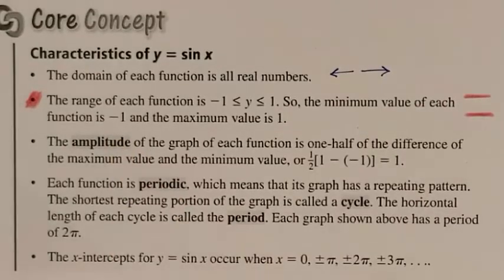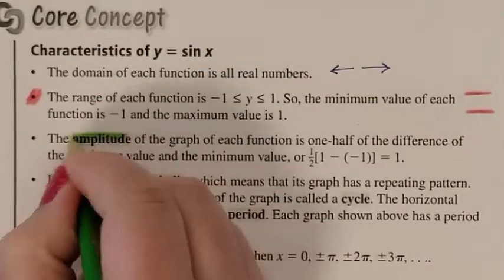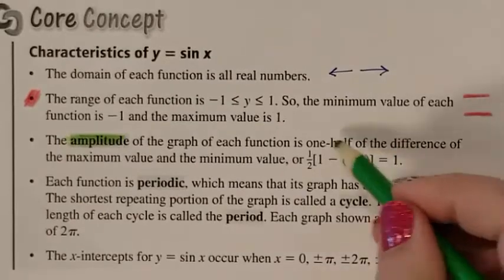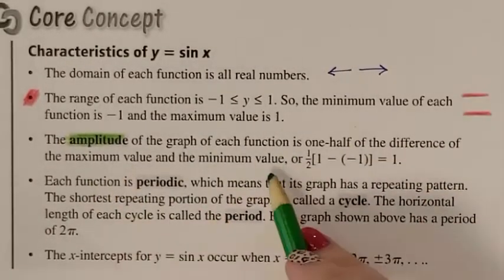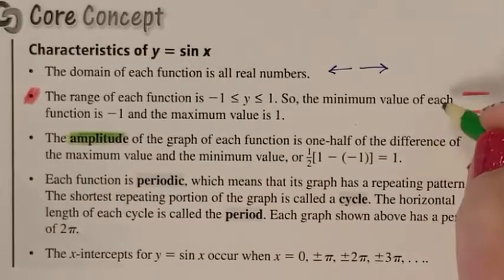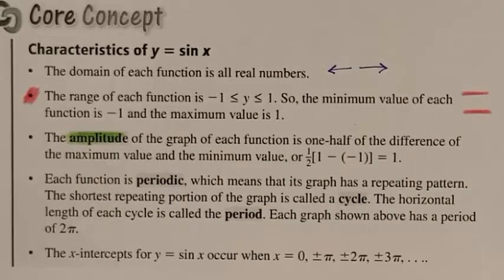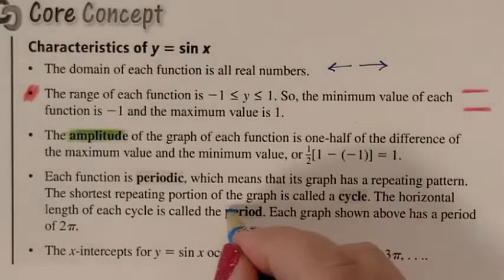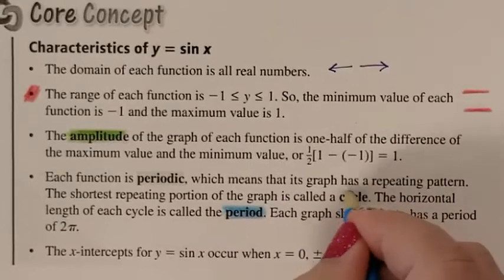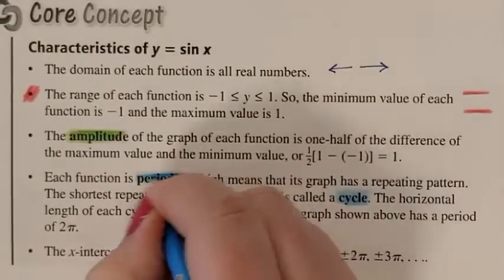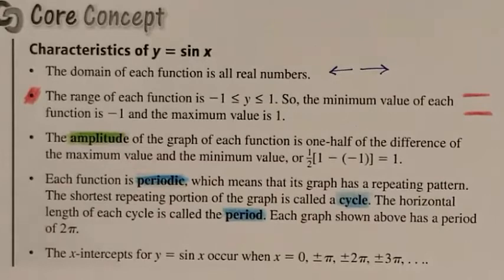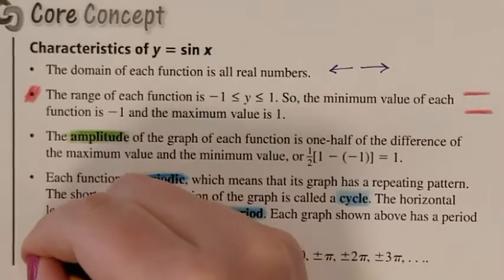Your amplitude, which we did in green, says it's one-half the distance of the maximum value and the minimum value. So it's half the distance of the range. Your period was what we had done in blue. Your period is how long it takes to repeat. And then our x-intercepts we had done in yellow. Your sine x-intercepts are at the whole pi values.